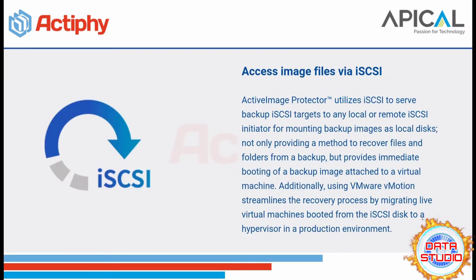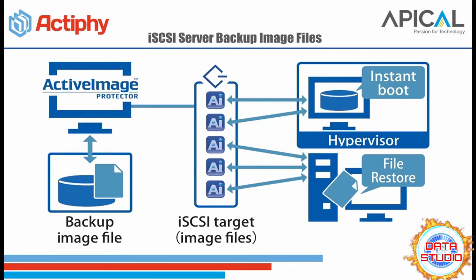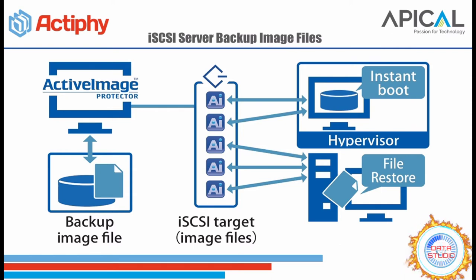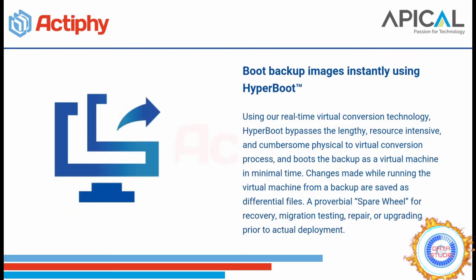Active Image Protector utilizes iSCSI to serve backup. iSCSI targets any local or remote iSCSI initiator for mounting backup images as a local disk, not only providing a method to recover files and folders from a backup, but providing immediate booting of a backup image of a virtual machine attached to a virtual machine. Additionally, using VMware vMotion streamlines the recovery process by migrating live virtual machines booted from the iSCSI disk to a hypervisor in a production environment.